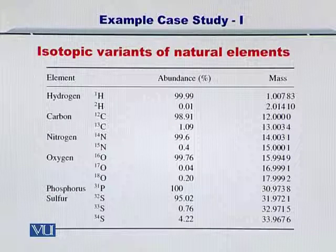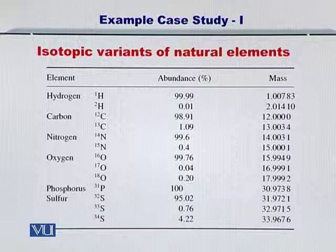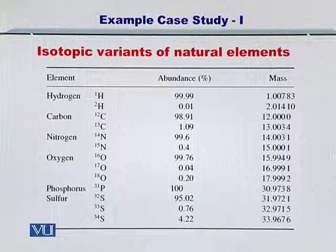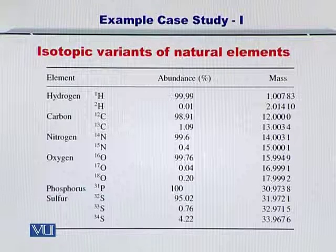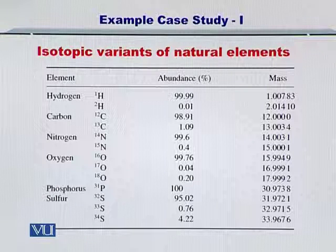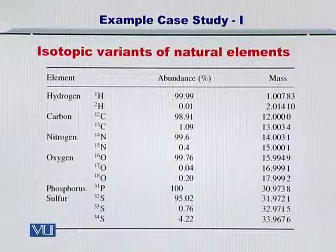Moreover, the abundance of each isotope varies. For instance, hydrogen-1 has an abundance of 99.9%, so if you were to select from 100 hydrogen atoms, there is a 99.9% chance you will have hydrogen-1. However, there is a very small chance — 0.01% — that the hydrogen element selected will be hydrogen-2. These variable masses and variable abundances lead to a variable molecular weight for the entire protein molecule.